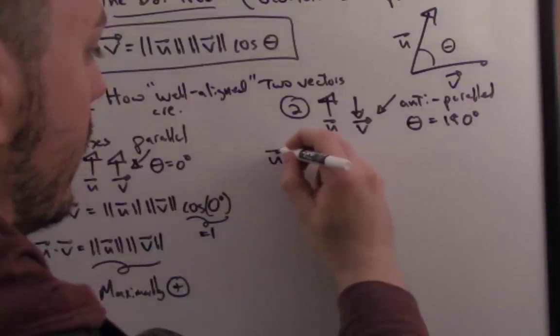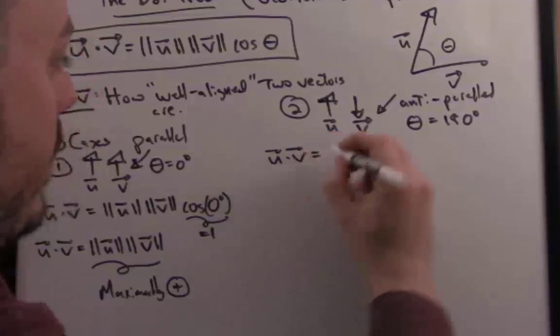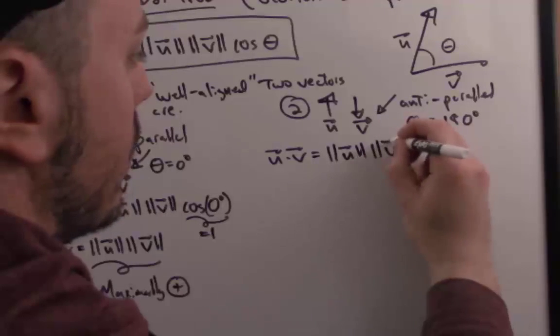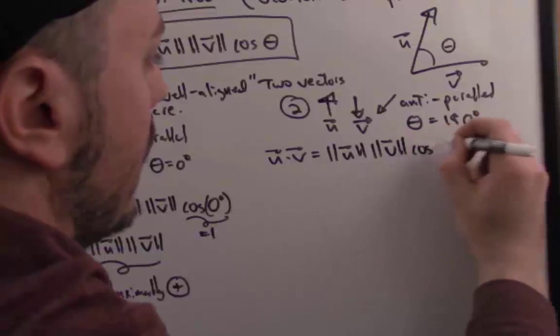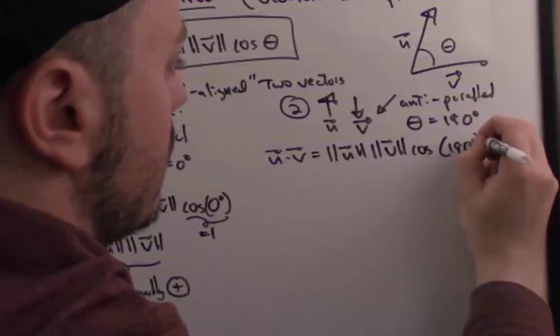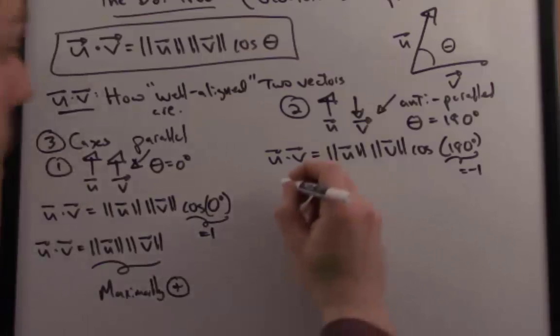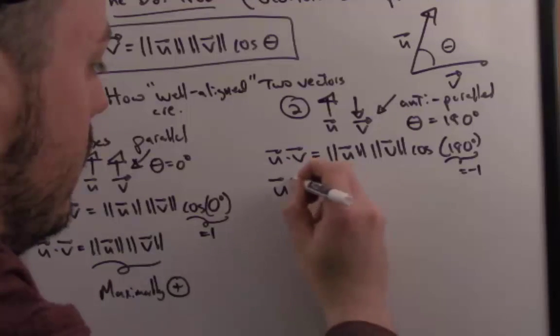So let's see what the ramifications here are for the dot product. The dot product, again by the identity, is the norm of u times the norm of v times cosine of 180 degrees. And from trigonometry, the cosine of 180 degrees is negative one. So therefore, the dot product of u and v, when my vectors are totally out of whack, in other words going in opposite directions, pulling the negative out, is negative norm u times norm v.